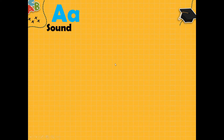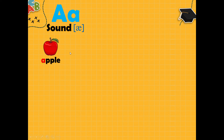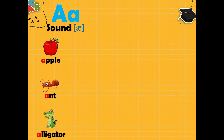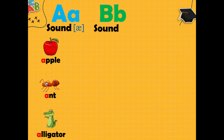Now let's check again letters and examples. A. This letter gives sound A. Good. What is this? It is apple. Apple. Good. What is this? It is ant. Ant. Good. What is this? It is alligator. Alligator. Good. Letter B gives sound B. Bear. B, bear.